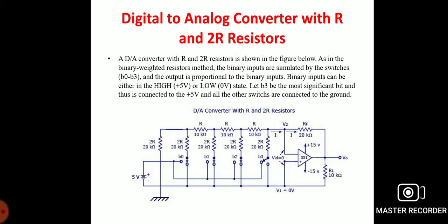Let B3 be the most significant bit, connected to positive voltage, and all other switches connected to ground. According to the Thevenin equivalent circuit, the Thevenin resistance Rth = 2R ∥ 2R + R, repeated through the network, equals 2R = 20 kΩ. In the resultant circuit, the 20 kΩ Thevenin resistance is connected through the feedback resistance giving the output for B3 high and B0, B1, B2 low conditions.